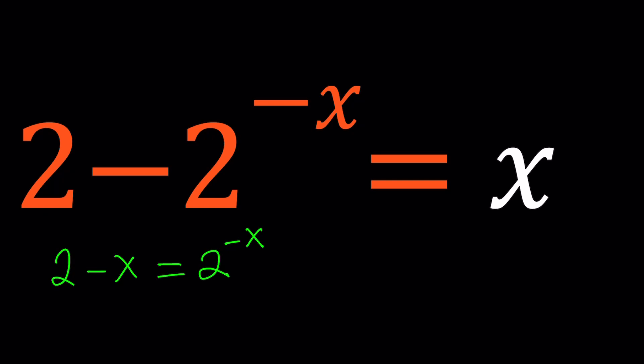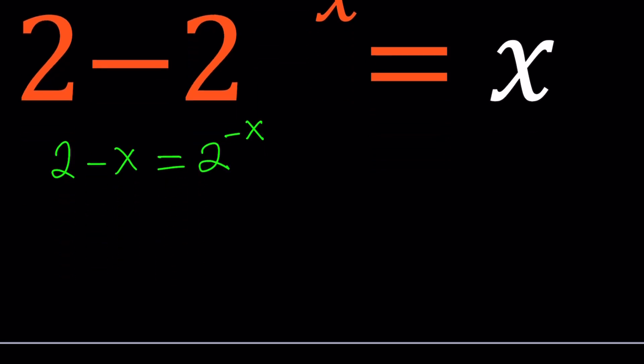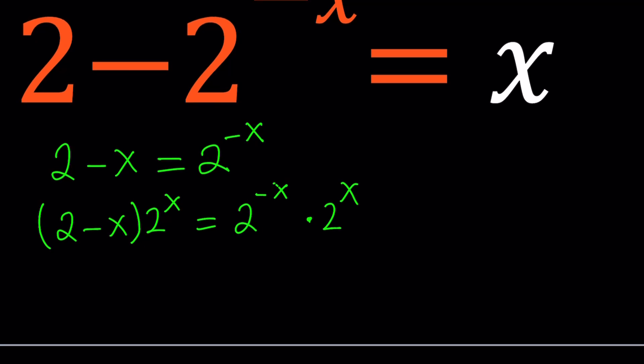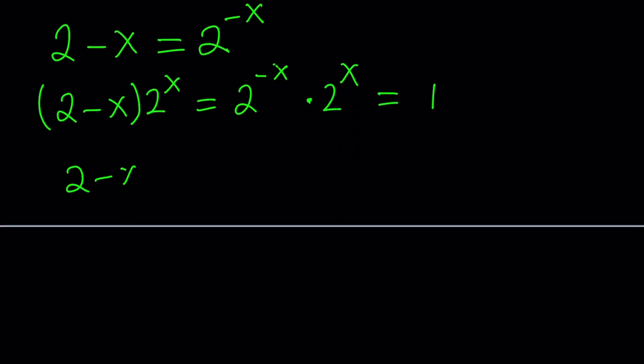I'm going to be doing a few different things on this equation to bring it to the point that I can manipulate using Lambert's W function. Let's go ahead and start by multiplying both sides by 2 to the power x. So 2 minus x times 2 to the x equals 2 to the power negative x times 2 to the power x. 2 to the negative x and 2 to the x gives us 2 to the power 0, which is 1. So we get 2 minus x times 2 to the power x equals 1.